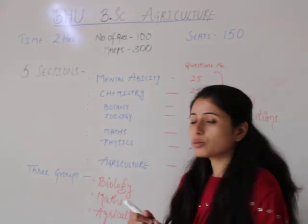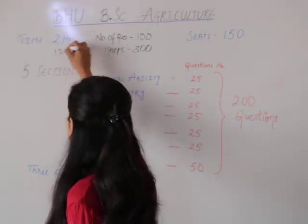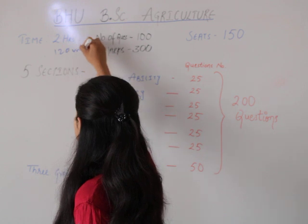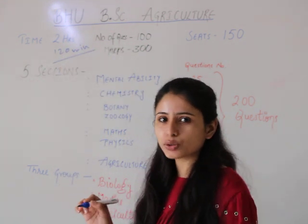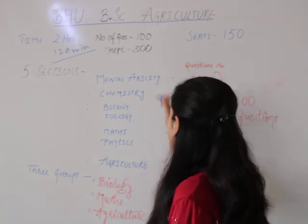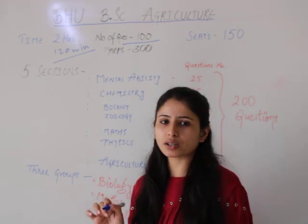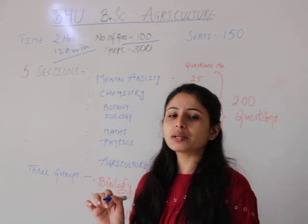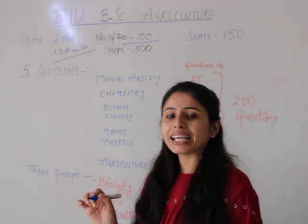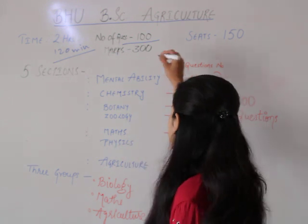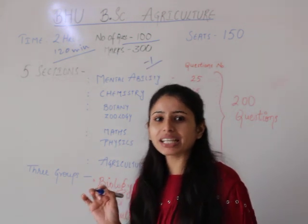If you are able to do the exam, you will have over 20 minutes and a total of 100 questions. The number of questions is 100 and it will be 300 marks. This means that 1 question is 3 marks. If you are wrong, then you will have a negative marking, so there is negative marking.